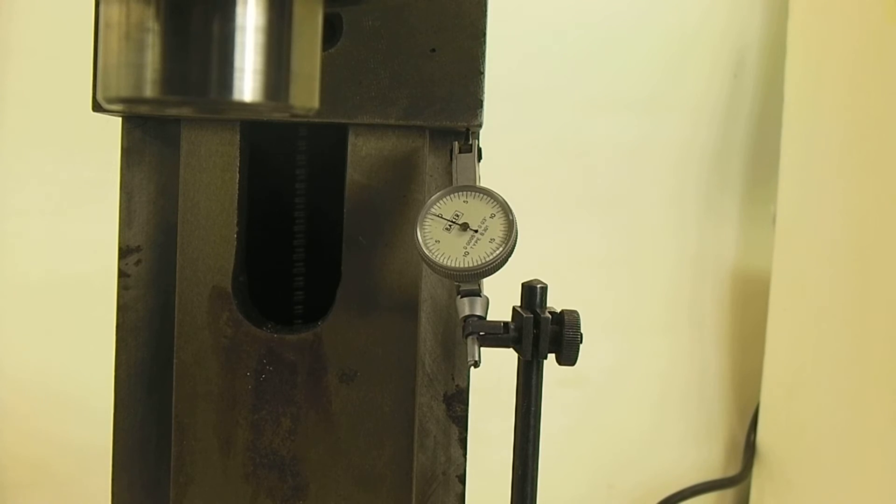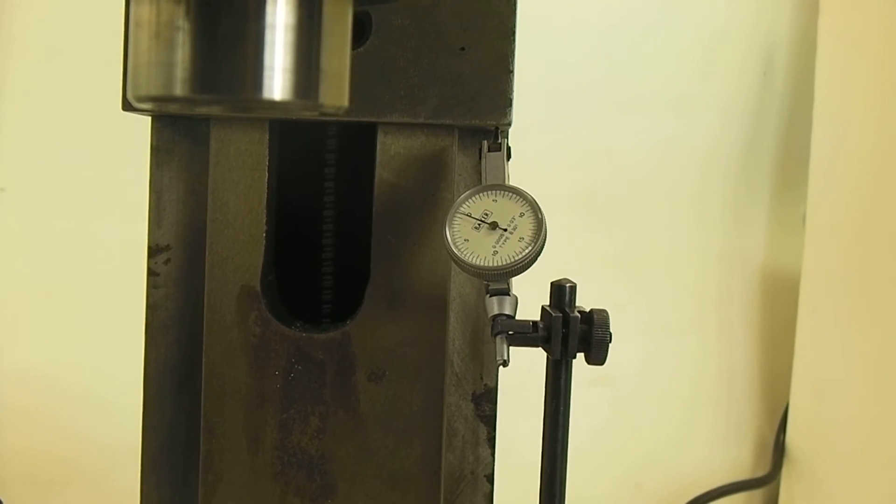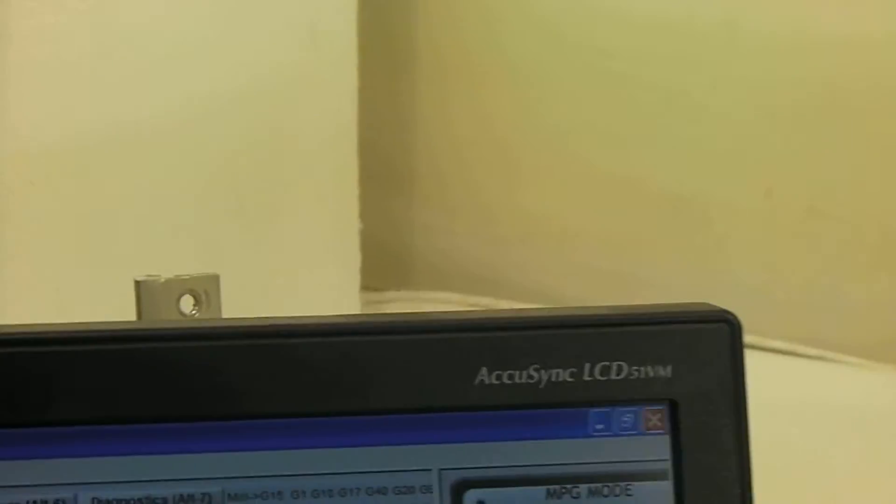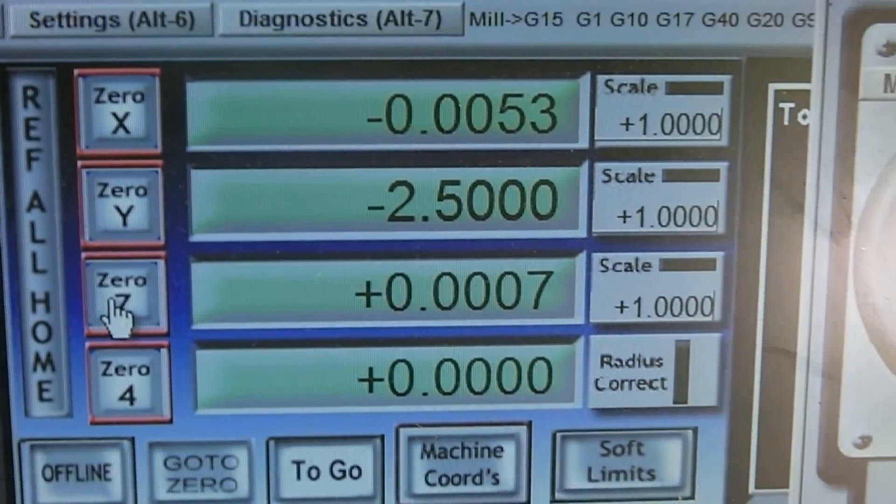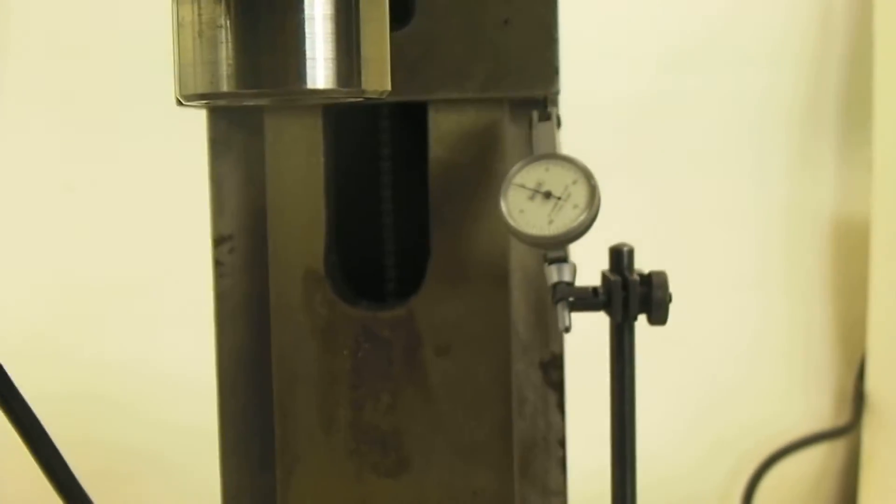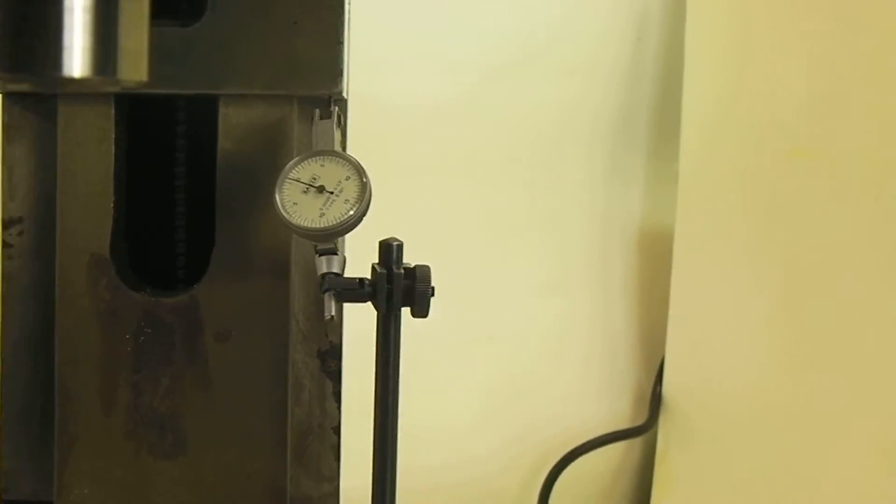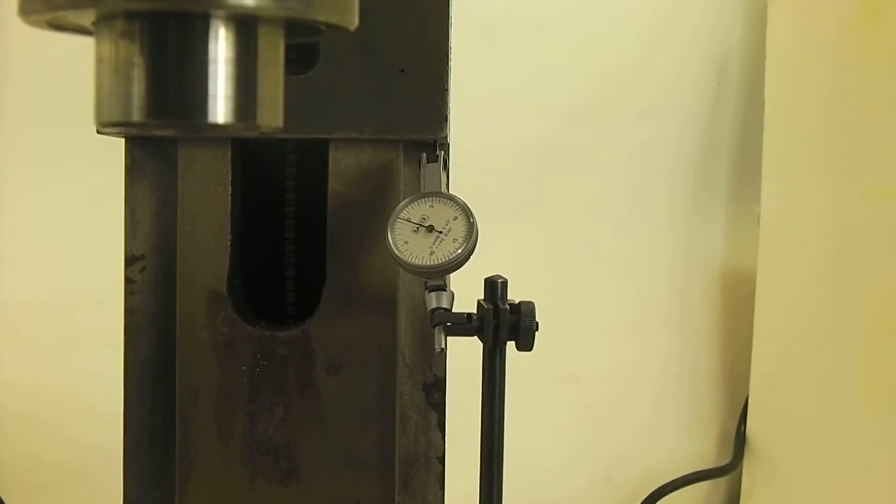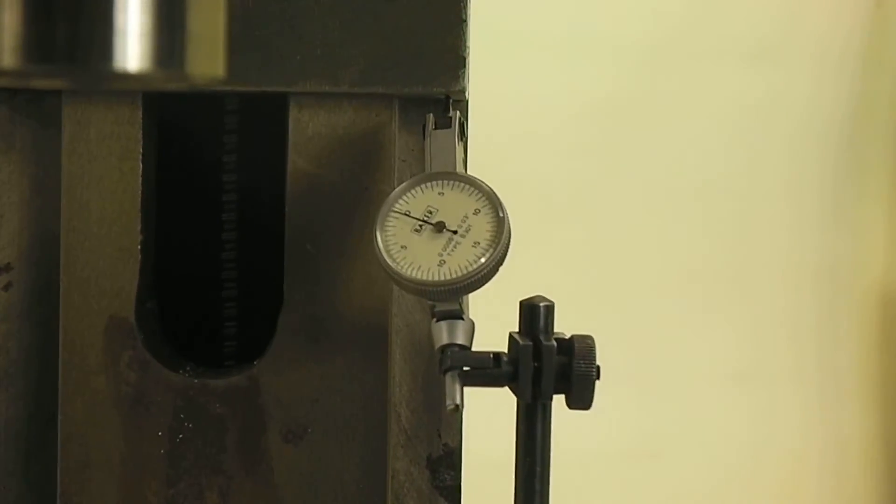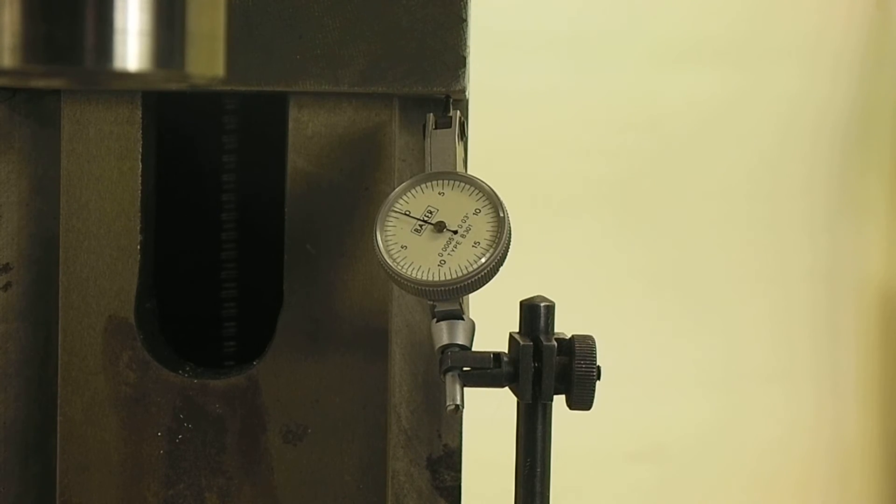And then we're going to go up until we see it move. I saw it move. And on the Z, we're getting 0.7 thousandths backlash. Now that's for the whole system, so you're going to have a little bit of slop in the ways and stuff like that, a little bit of flex and everything.